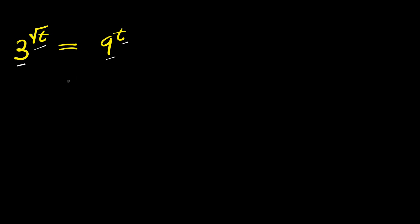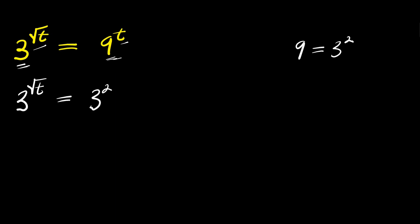What we can do is to ensure that these two bases are the same. This is 3 and this is 9. We know that 9 is a perfect square, which is 3 to the power of 2. So I am going to have 3 to the power of square root of t, and this equals 9 — we can replace it with 3 to the power of 2 — and this is to the power of t.